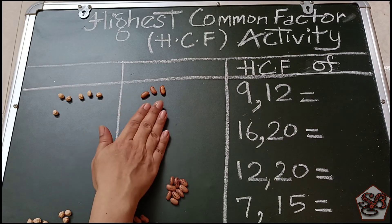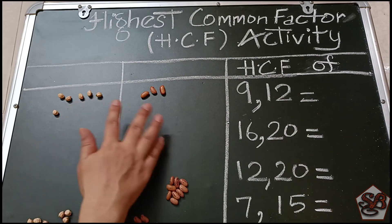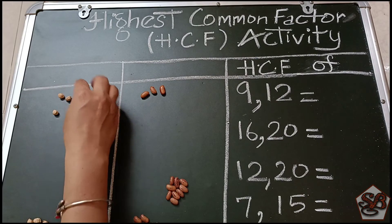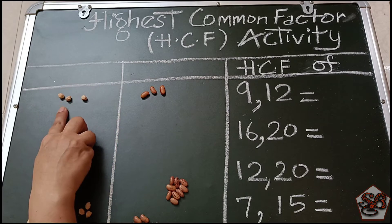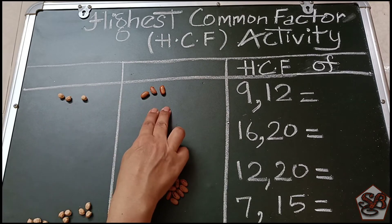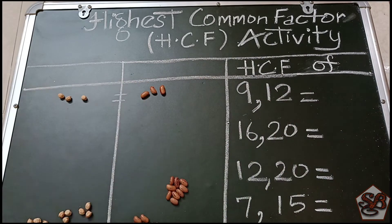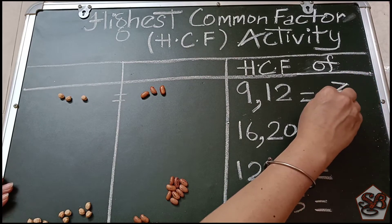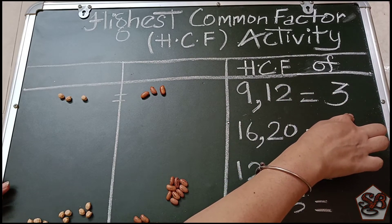Again, here we have 3 and here we have 6. So among these two, the bigger number is 6, and we subtract 3 from it. Now we have 3 seeds here and 3 seeds here — they are equal! So our HCF for 9 and 12 is 3.